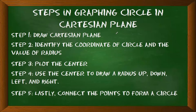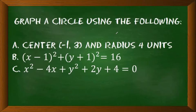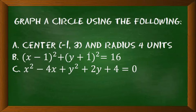In mathematics there are different problems you will encounter in graphing a circle. Here are the following possible problems in graphing a circle in the Cartesian plane. Problem 1: Given a center (-1, 3) and radius 4 units. Problem 2: Given a standard form. Problem C: Given a general form. We will be graphing each of these separately.